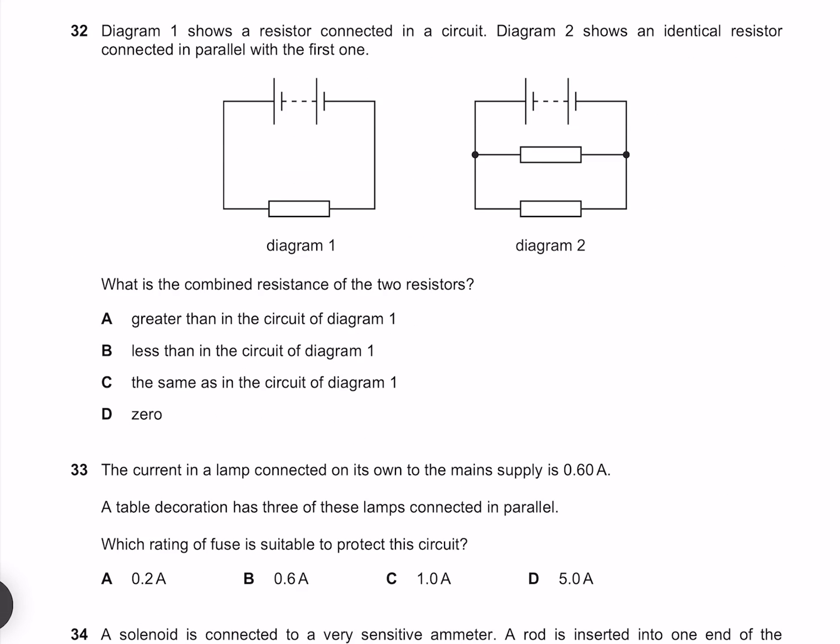Diagram 1 shows a resistor connected in a circuit. Diagram 2 shows an identical resistor connected in parallel with the first one. What is the combined resistance of the two resistors? You might expect that adding a resistor is going to add to the resistance, but what's more important is that you have added another pathway. And no matter how bad that pathway might be, it still allows more current to flow and therefore results in a decreased resistance. Therefore our combined resistance of the two resistors is going to be less than in the circuit of diagram 1.